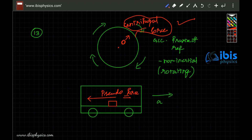The pseudo force acting on a rotating frame is called centrifugal force, not centripetal force. Centrifugal force and centripetal force can never form a pair. If you observe from outside, we call it centripetal; if you observe from inside the frame, we call it centrifugal.